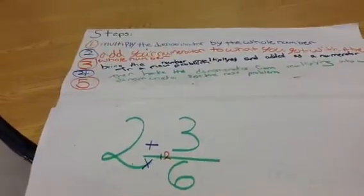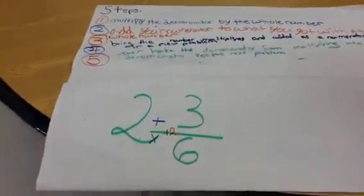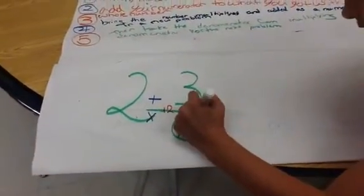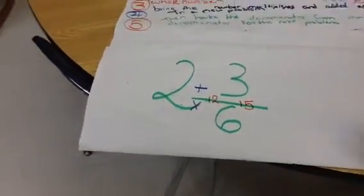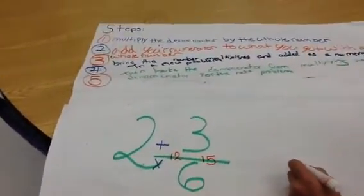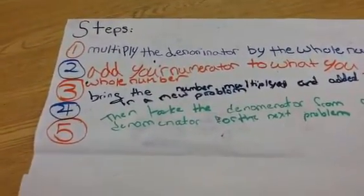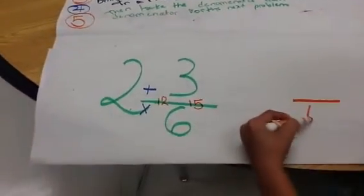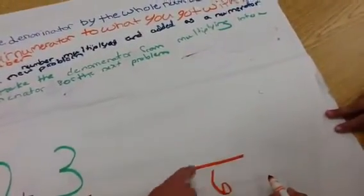Second step: add your numerator to what you got with the whole number. So now you're doing 12 plus 3, and then you get 15. Your denominator stays the same. So your denominator is 6, and then you bring your 15 all the way over here.